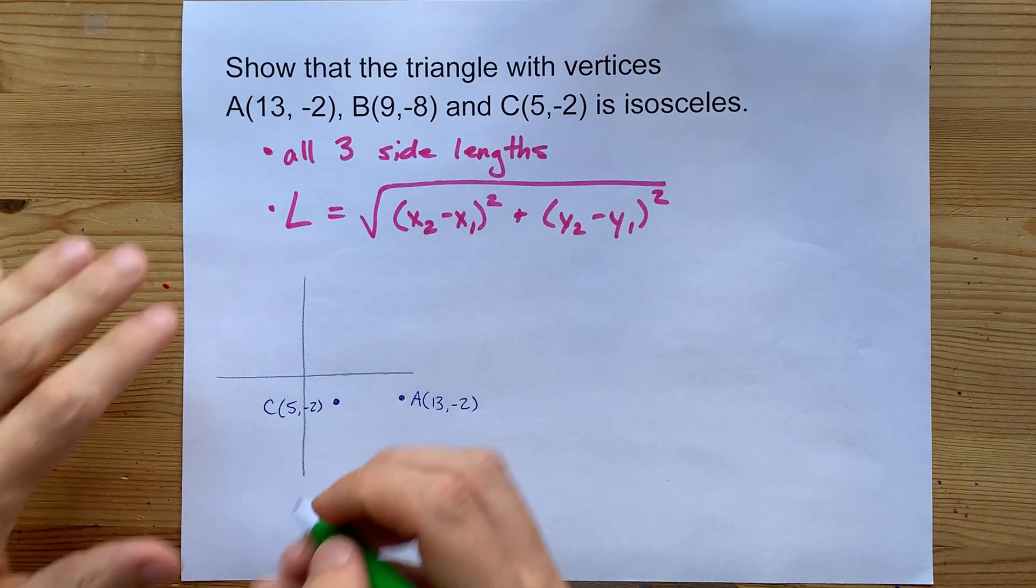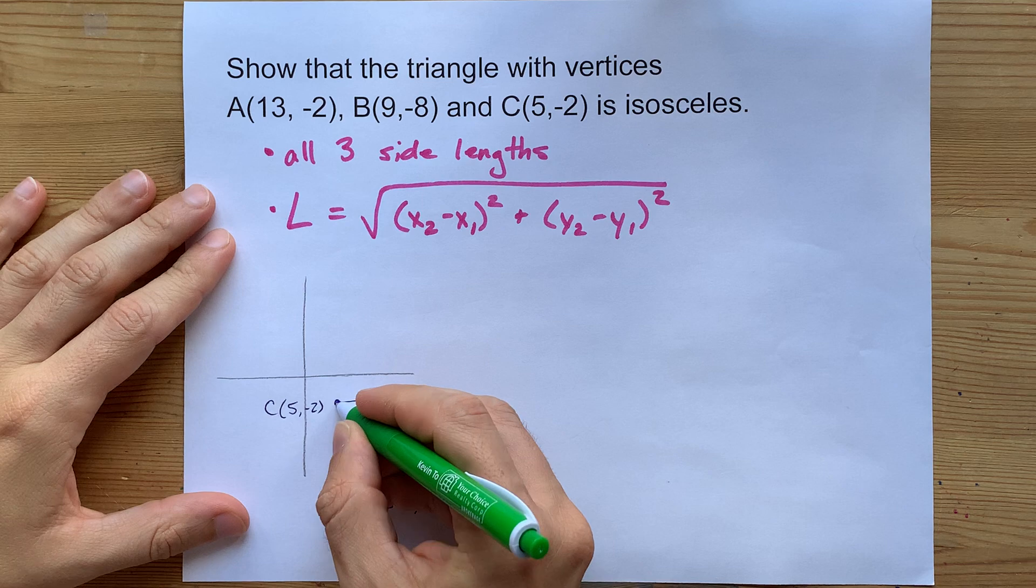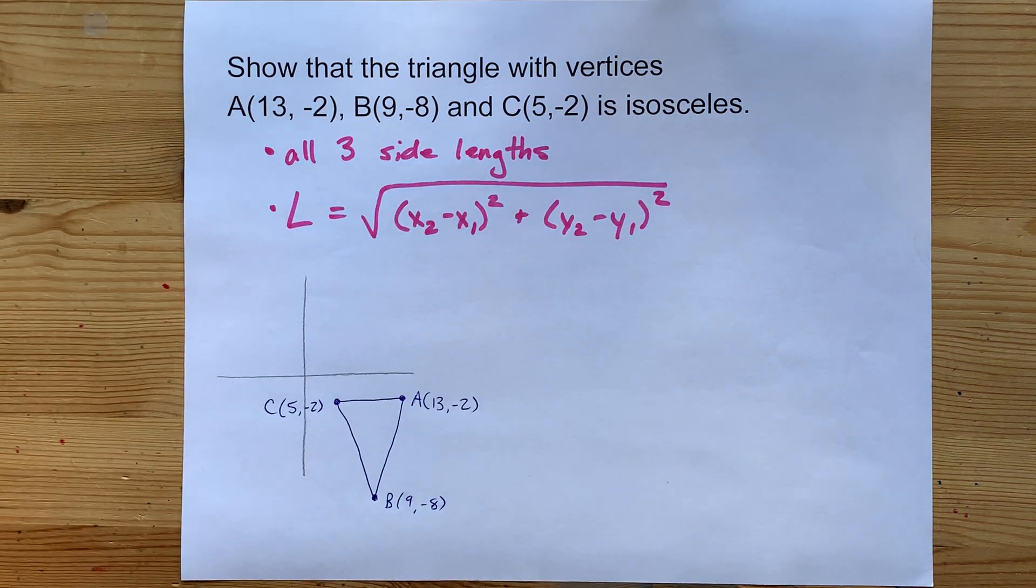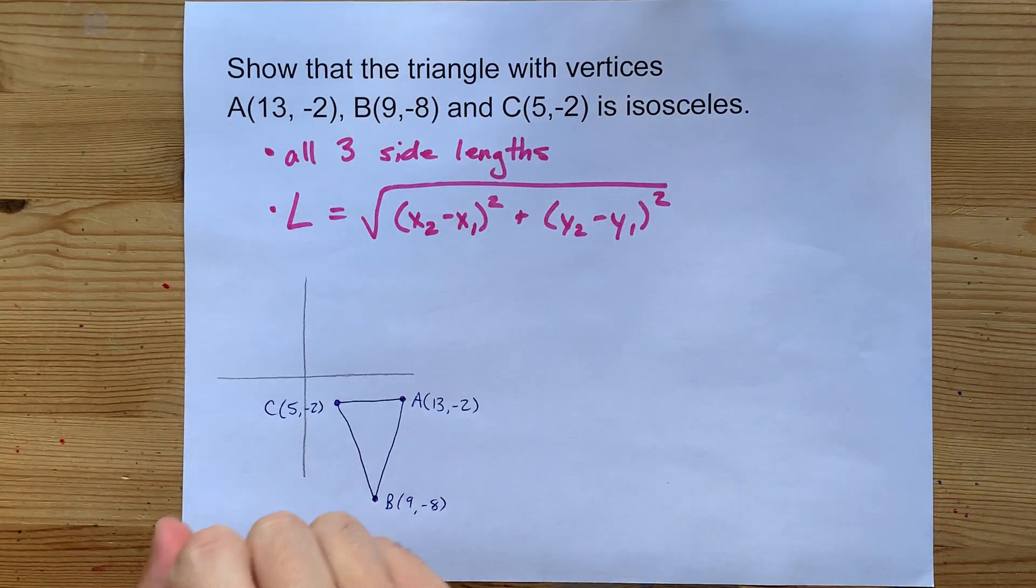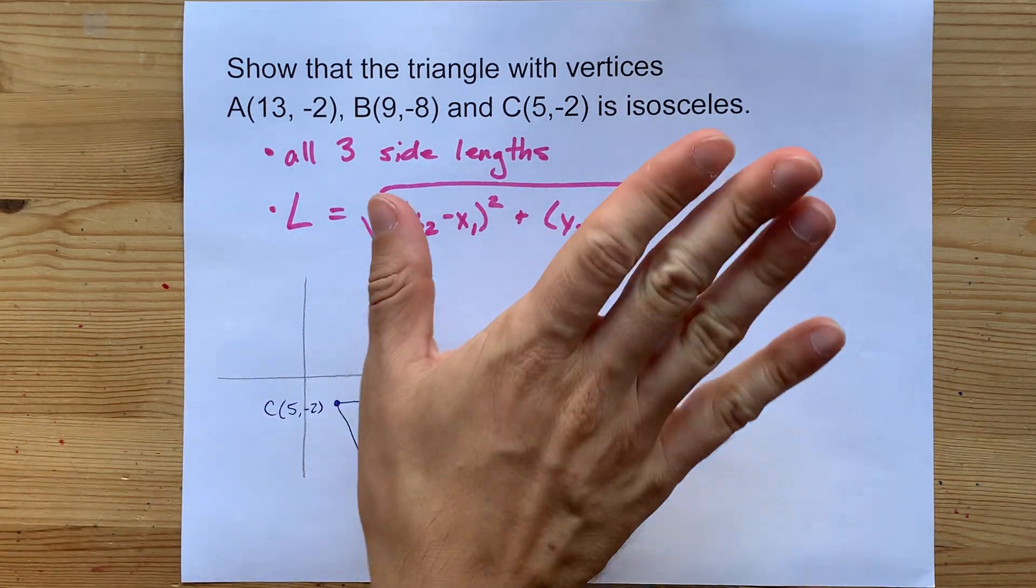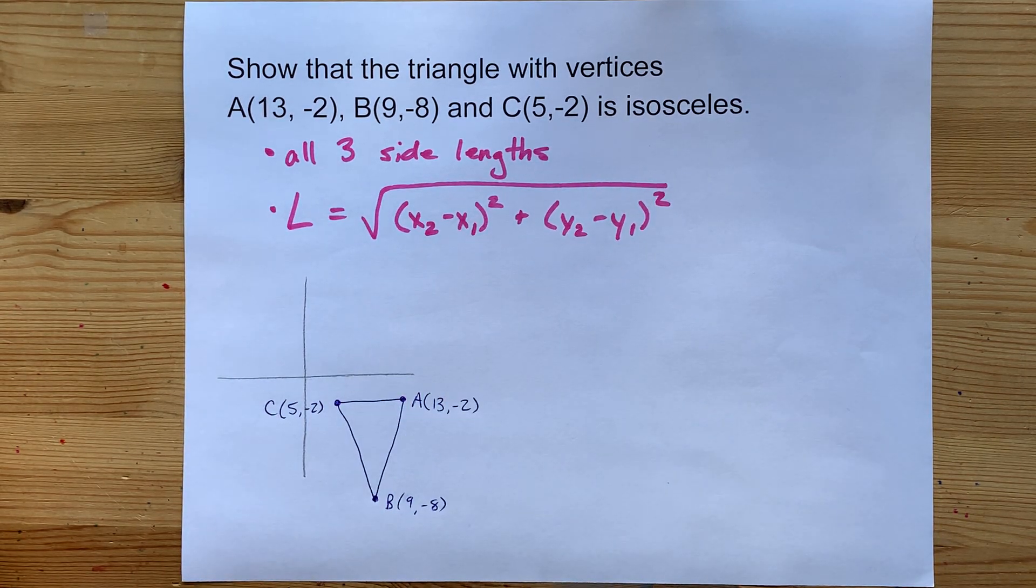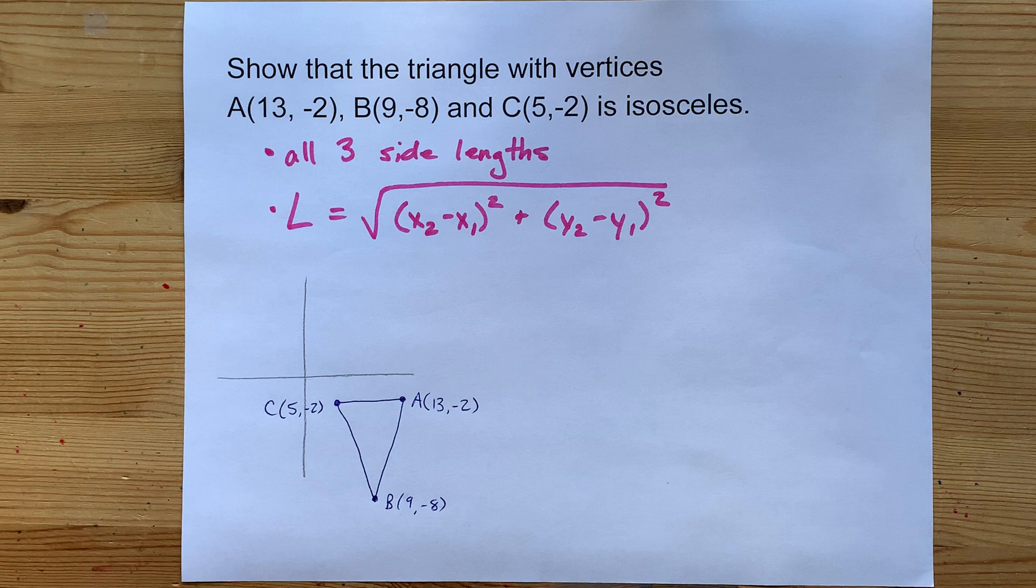All right, so the triangle itself is here. Your job is to prove that something is isosceles, which means two sides of the same length, or equilateral—all three the same length—or scalene, where none of them are equal. You're still going to have to do three length formulas.